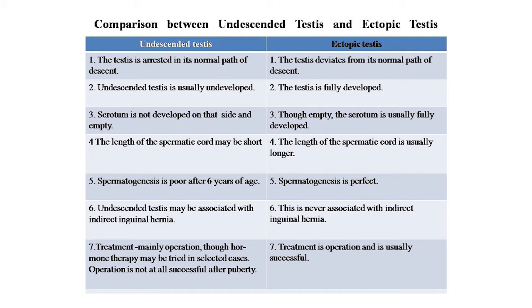Spermatogenesis is poor after 6 years of age in undescended testis, whereas it is normal and complete in ectopic testis. Undescended testis may be associated with indirect inguinal hernia, whereas ectopic testis is never associated with it. Treatment of undescended testis is mainly operative, though hormone therapy may be tried in selected cases, and operation is not successful after puberty. In ectopic testis, treatment is operation and is usually successful.